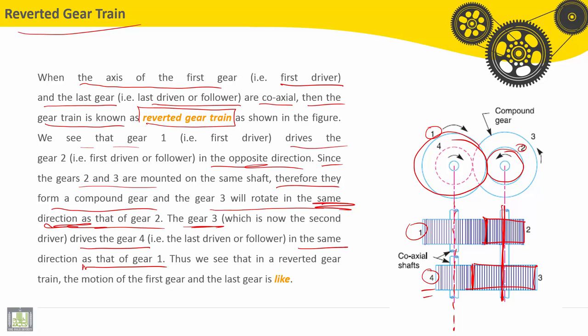Gear three drives the gear four in the same direction as that of gear one. Thus, we see that in a reverted gear train, the motion of the first gear and the last gear is alike.